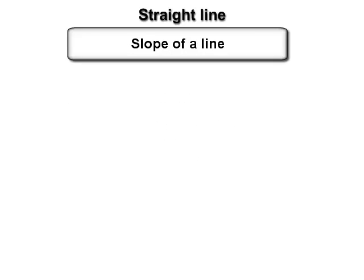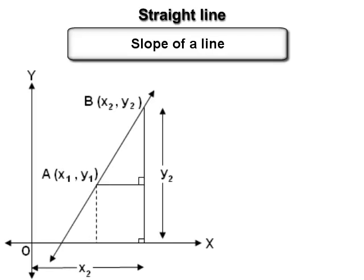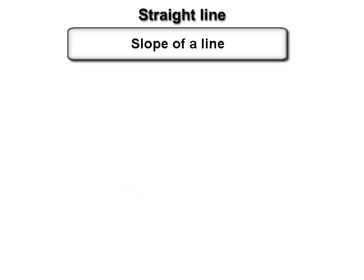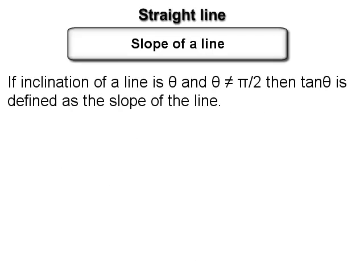Slope of a line — this is an important concept. Suppose A(x₁, y₁) and B(x₂, y₂) are any two distinct points on a line, then the slope of that line is defined by m = (y₂ − y₁) / (x₂ − x₁), provided x₁ ≠ x₂.